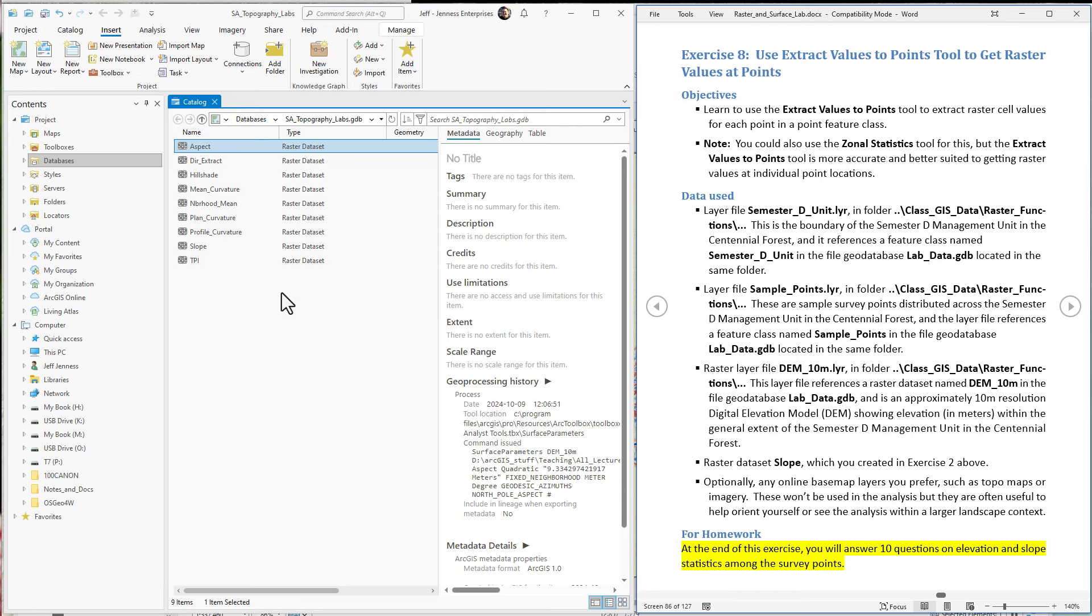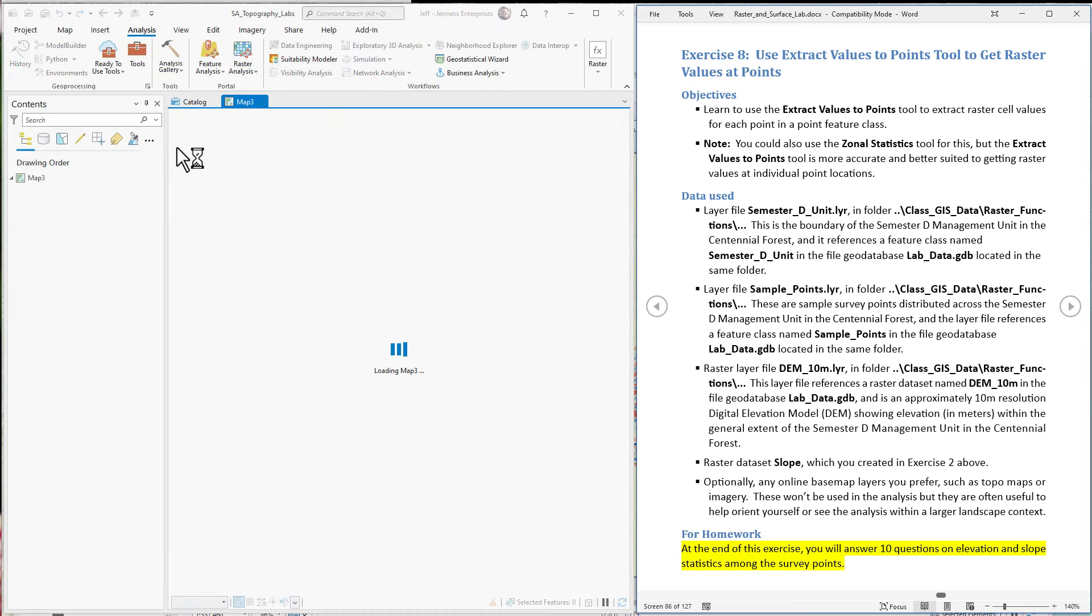All right. Next step. Let's add a map that we can do our lab exercise in. Click the insert tab, then choose new map. I'm going to name it multi values just so I keep my map straight.